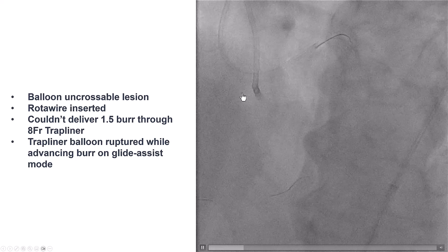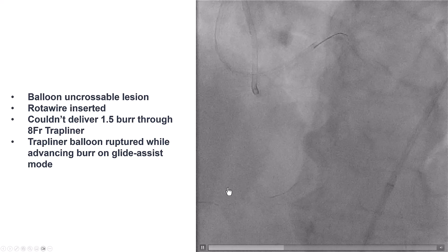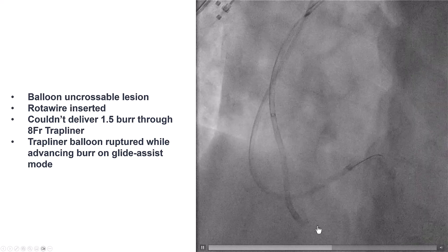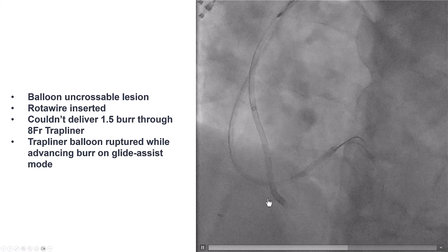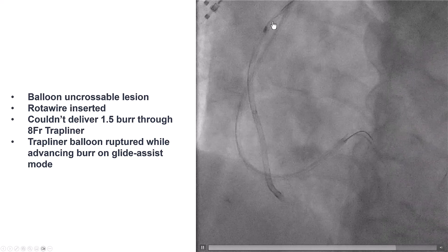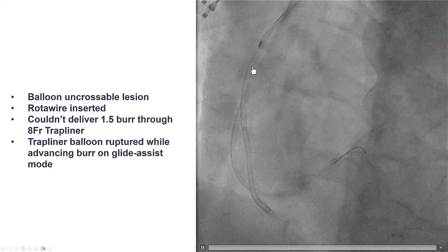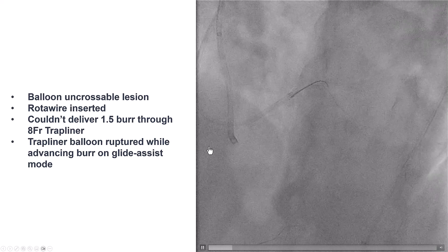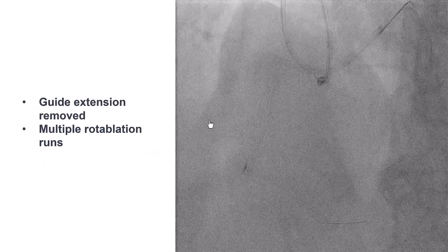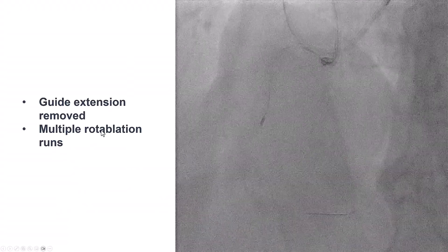However, we still had problems because of the heavily calcified coronary artery. We had difficulty delivering equipment and decided to go with rotational atherectomy. We were able to advance a roto wire. We did have the TrapLiner, but we ran into trouble with the burr — we couldn't deliver it through there. Maybe because of the DynaGlide, we actually ruptured the TrapLiner balloon. So the lesson here was that it may be best to remove the TrapLiner before trying to do rotational atherectomy, which is what we did. We then performed multiple runs with rotational atherectomy.